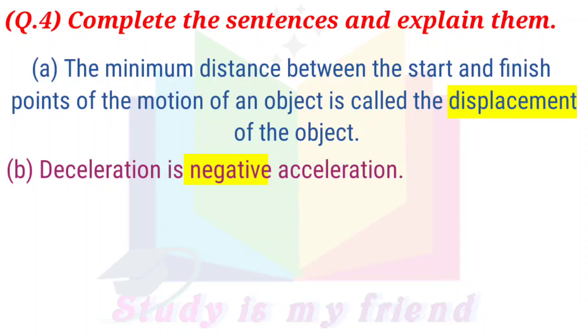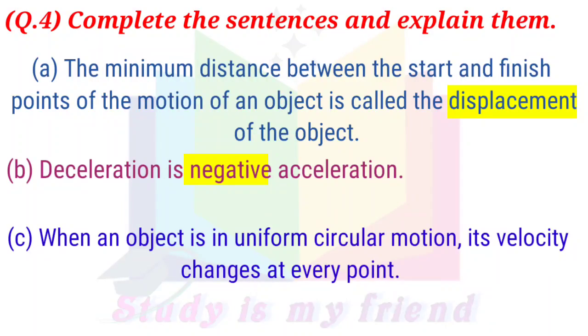B. Deceleration is negative acceleration. C. When an object is in uniform circular motion, its velocity changes at every point.